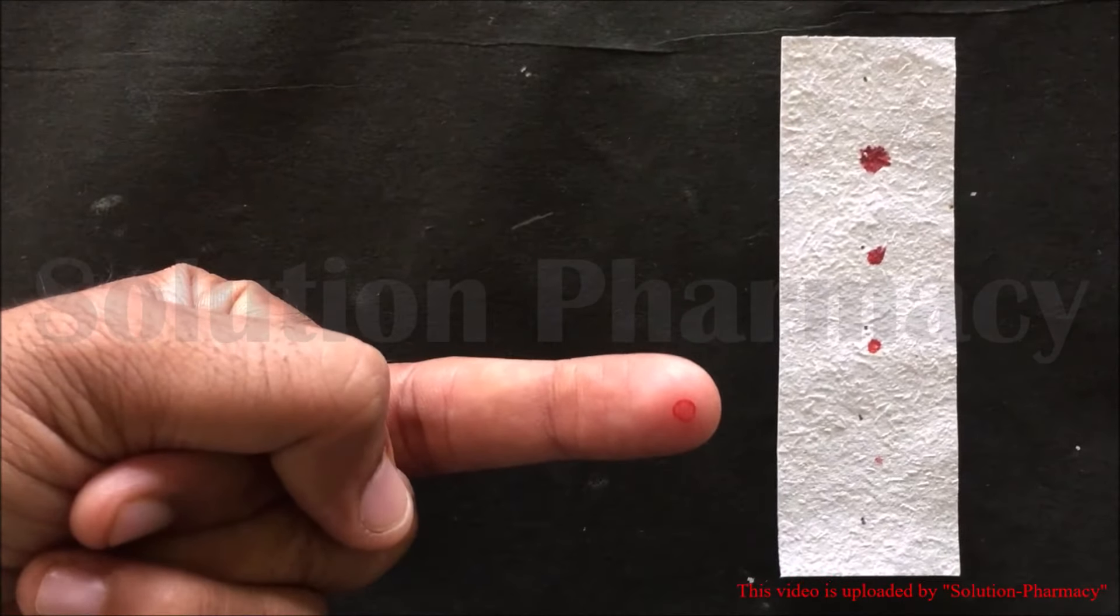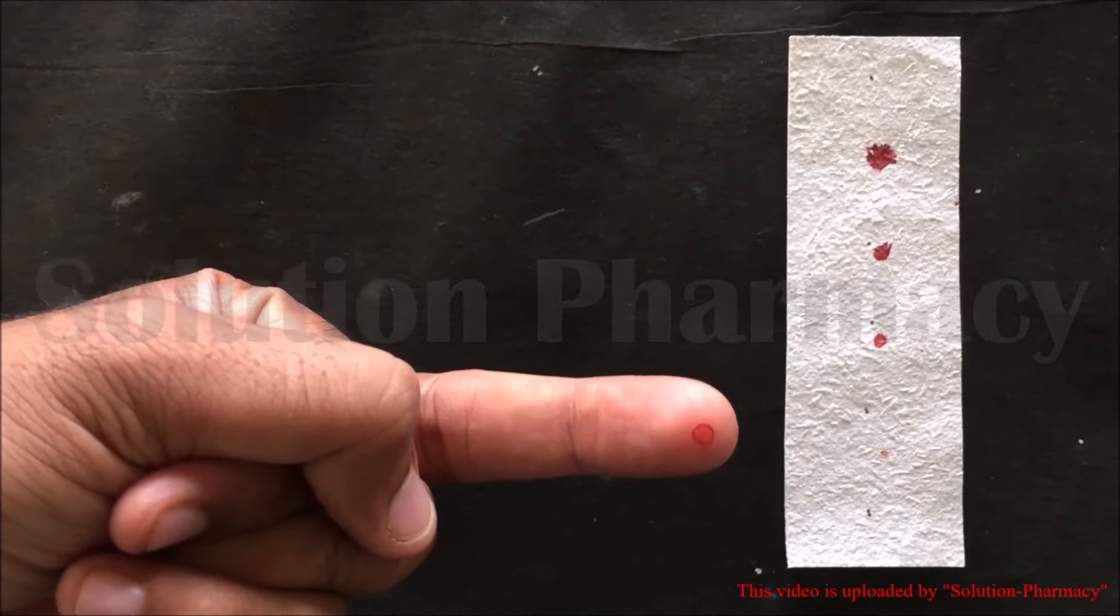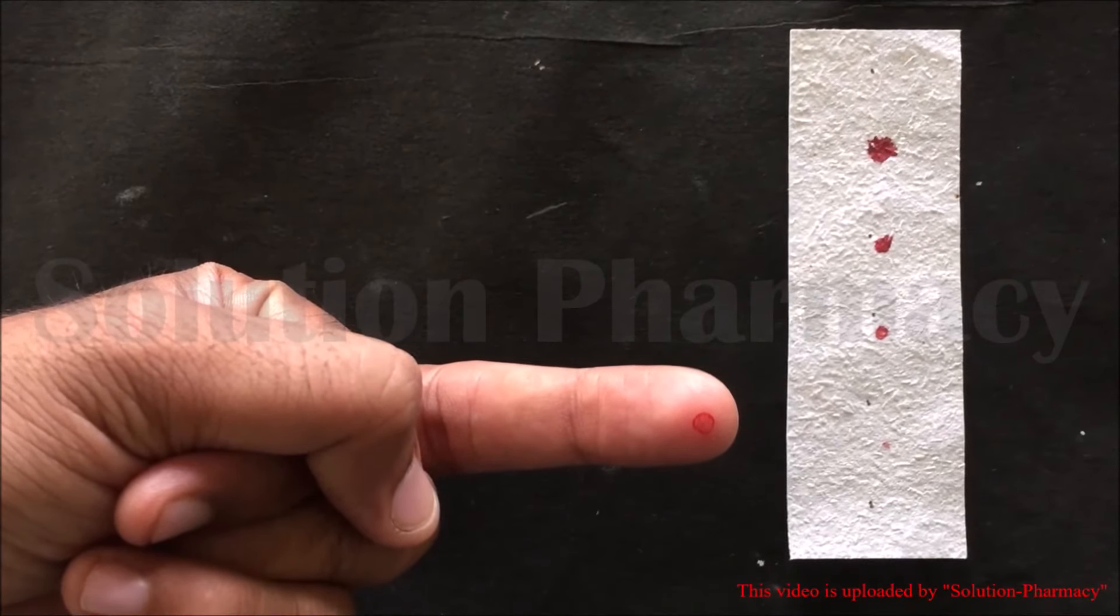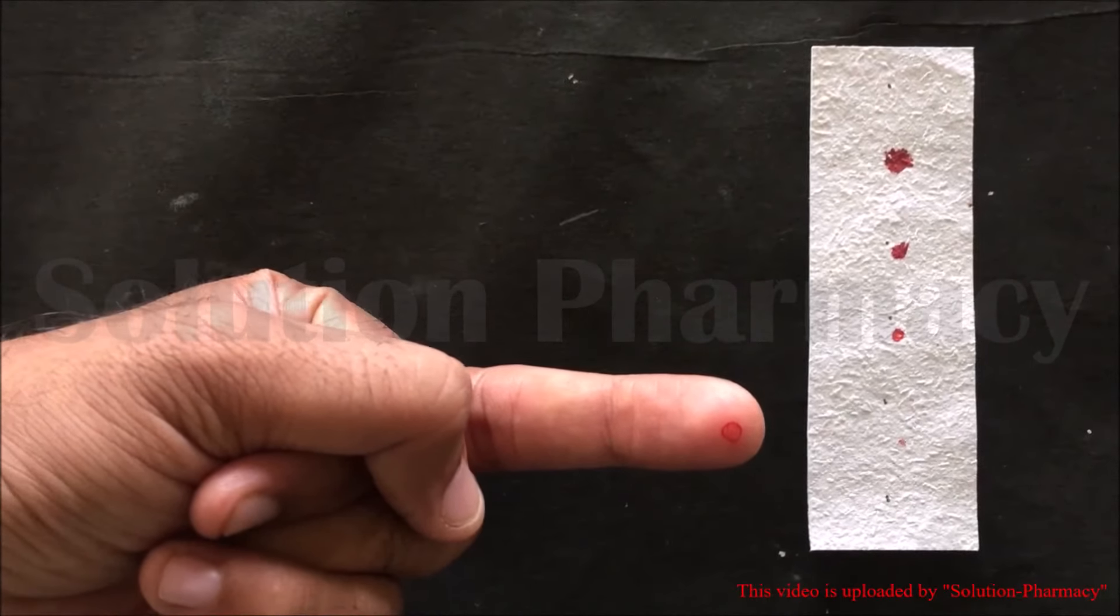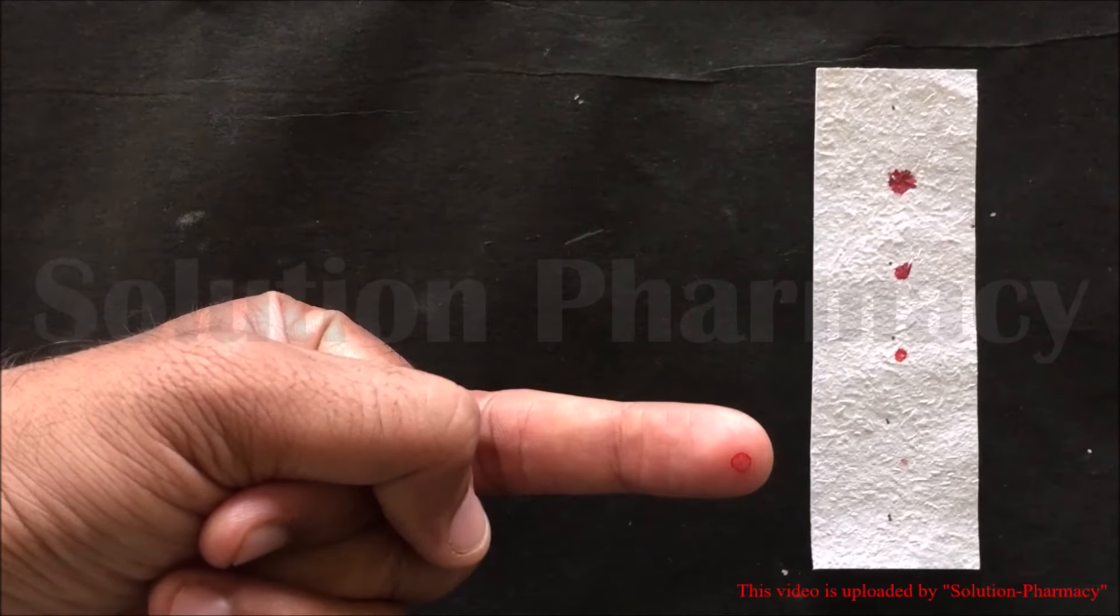Bleeding time is the time interval between the onset of bleeding till the spontaneous stoppage of bleeding, means blood stops to flow. Bleeding time is usually between 1 to 5 minutes.